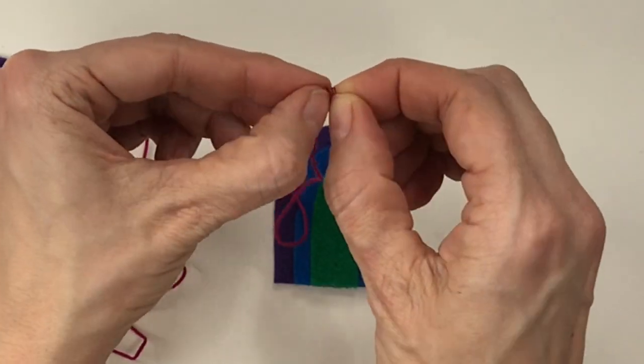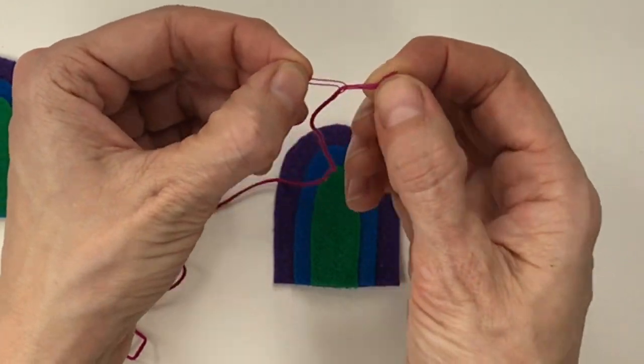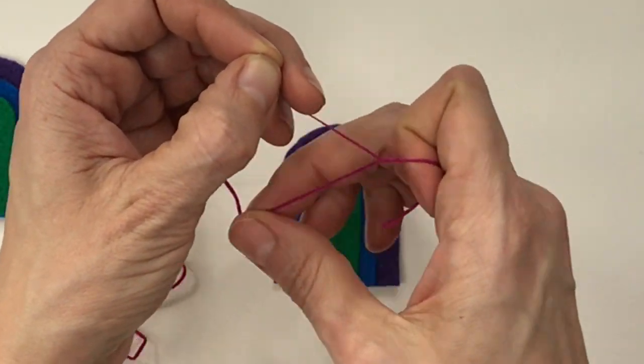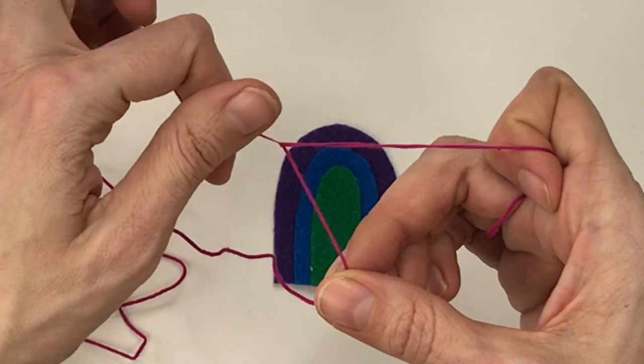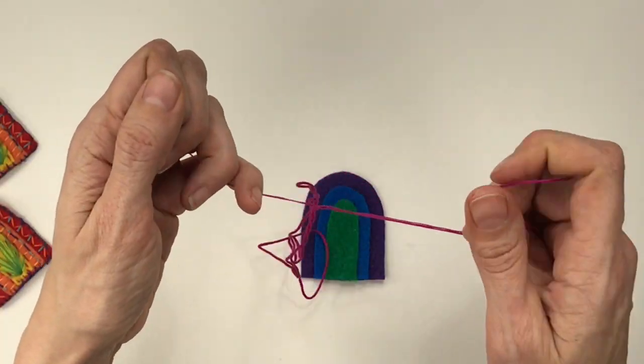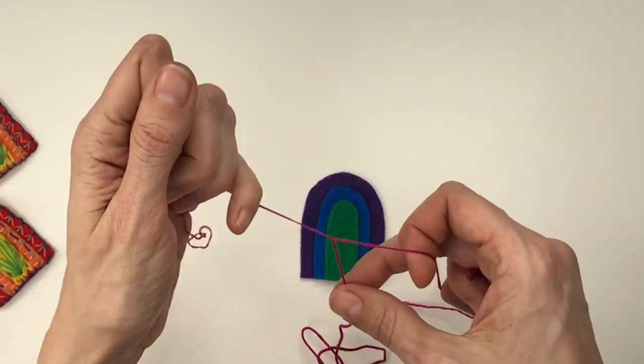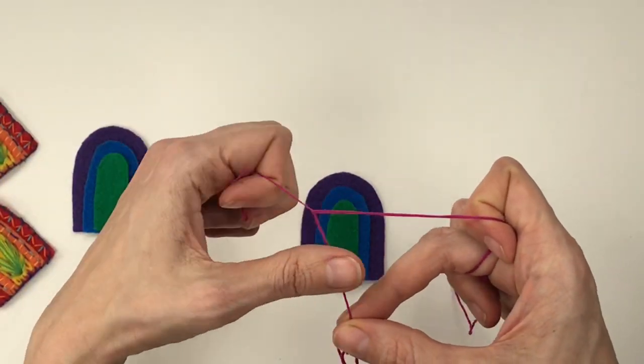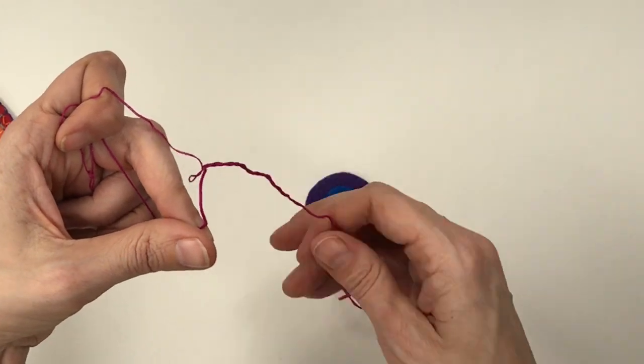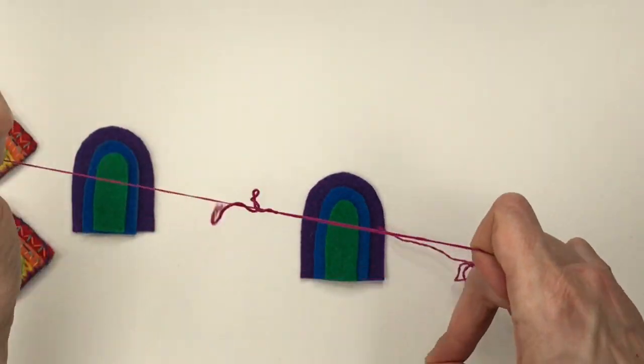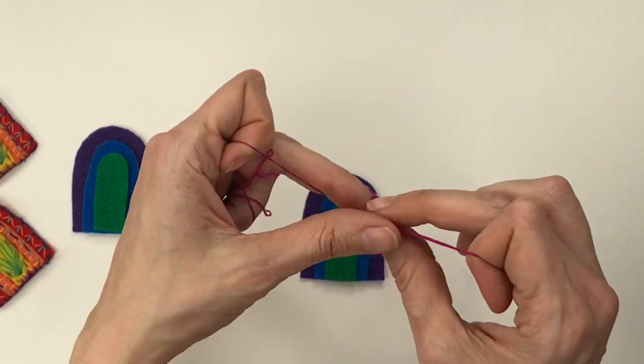All right, let's talk embroidery floss. It comes in a bunch of beautiful colors, it's so super cheap, but it comes in six separate strands which you might want to separate. It does help to pull the bottom of the floss as you separate, and that will keep it from tangling into a bigger mess than it probably already will be.